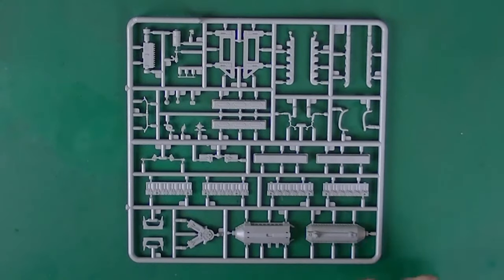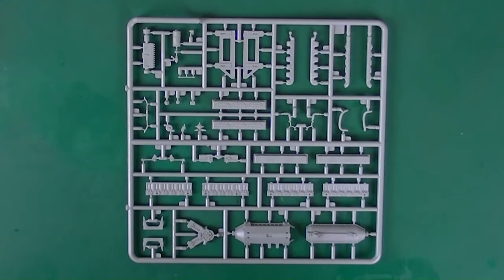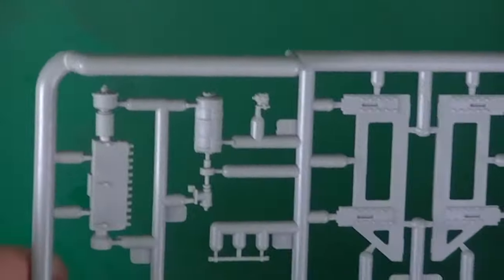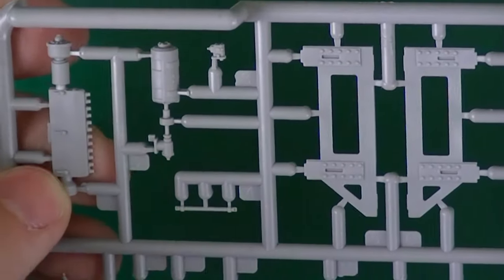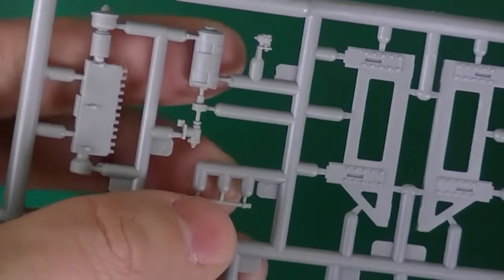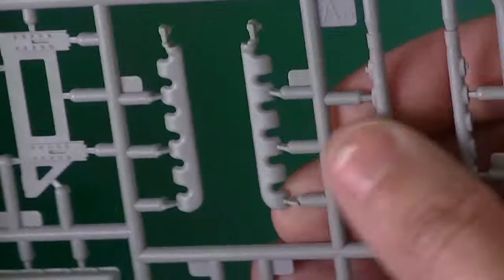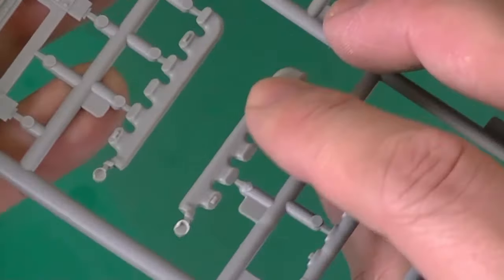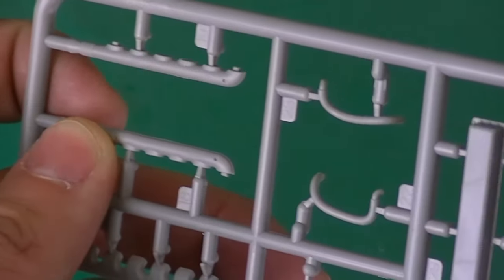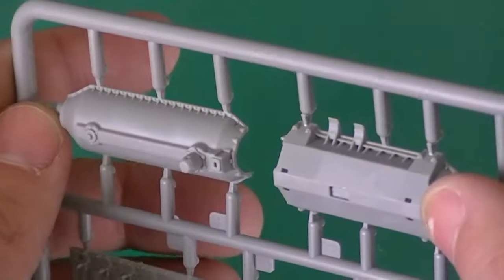Then you have this sprue which is by the look of it just engine parts. Pretty nice. Pretty small parts. A little thick maybe. And there's the main piece.